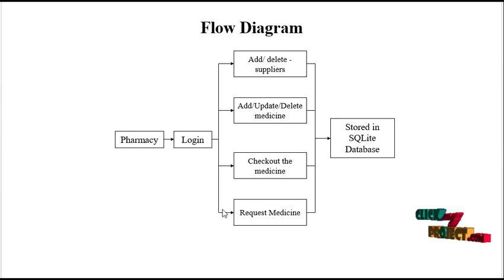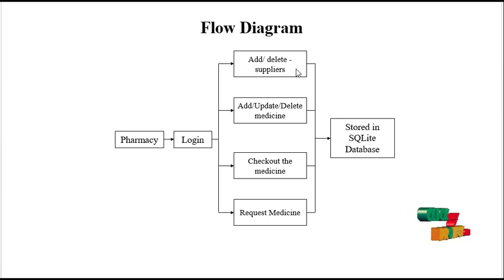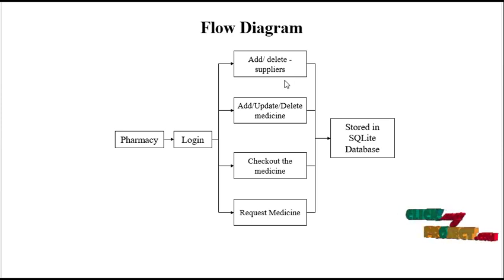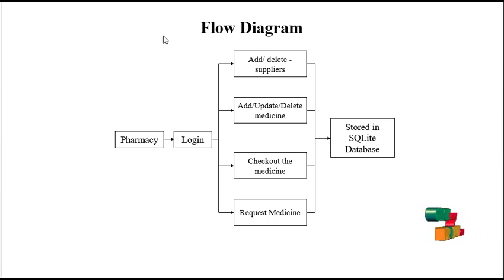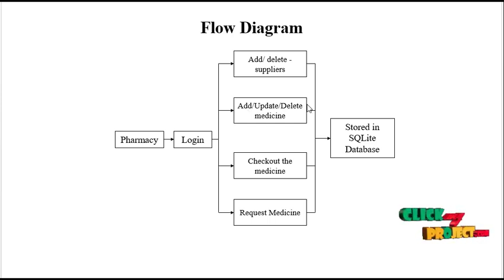Let's see in the app demo. First, add supplier or delete supplier. In this section, we need to add supplier name and supplier email ID. Then, add the medicines — medicine name, medicine category, and price of the medicines.